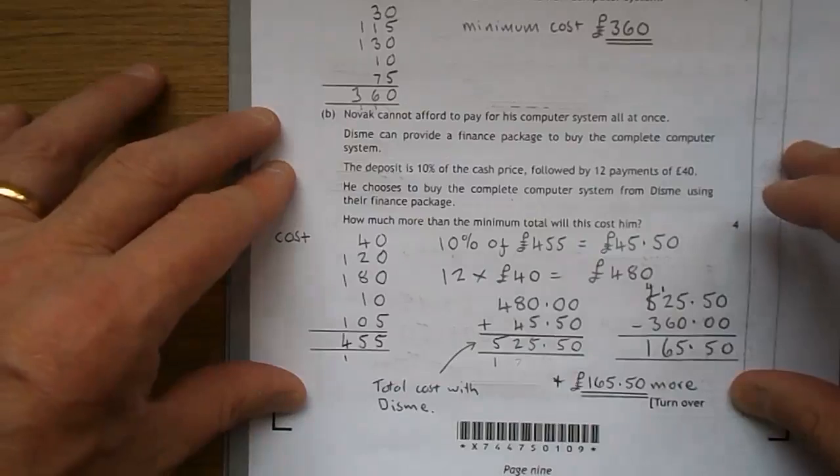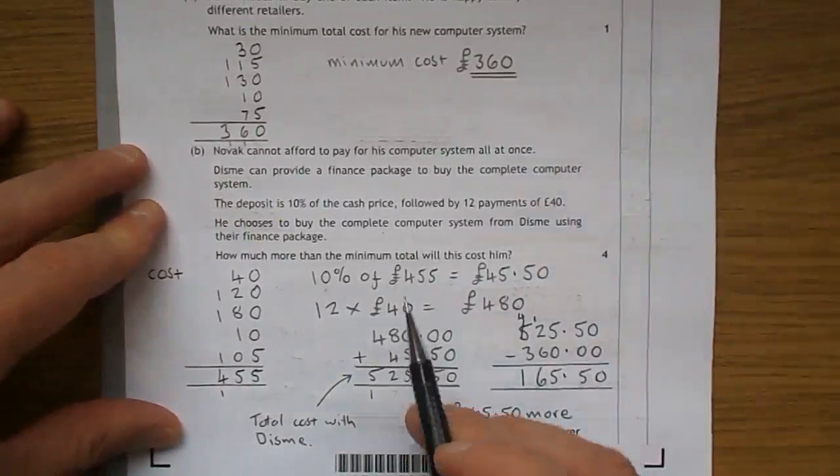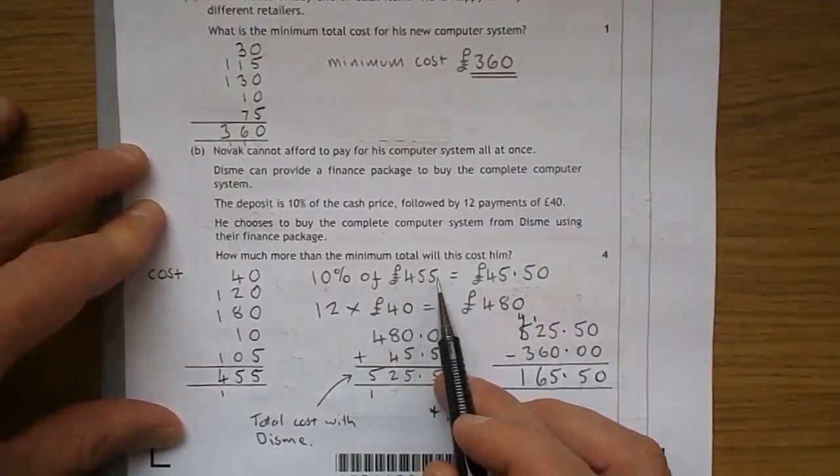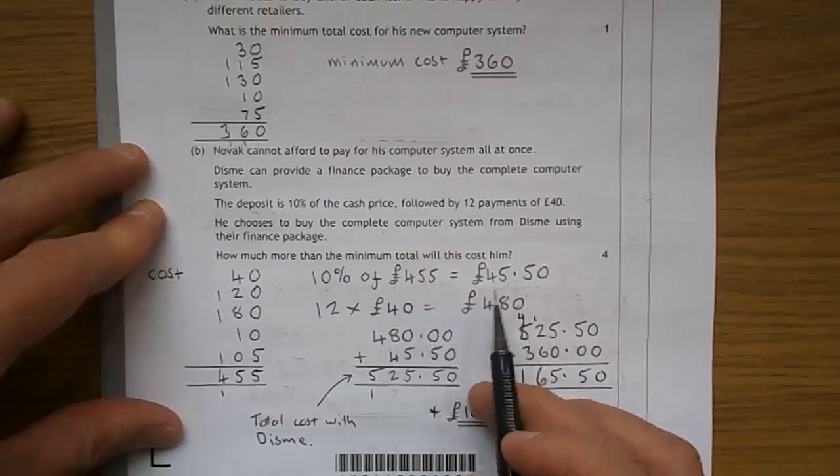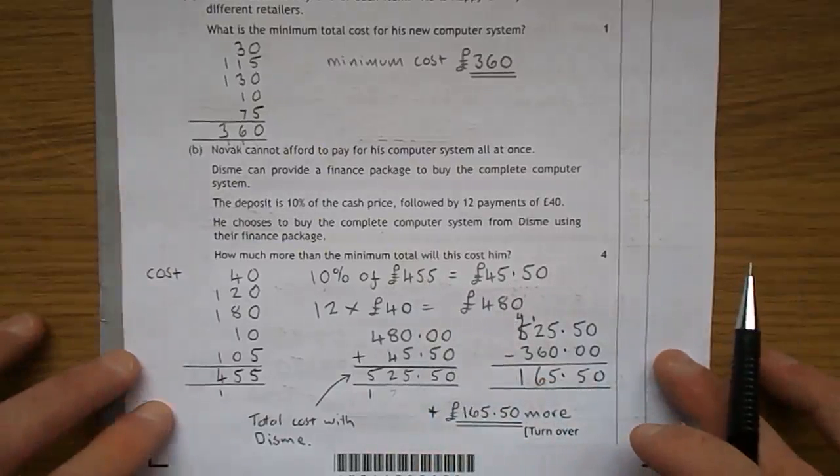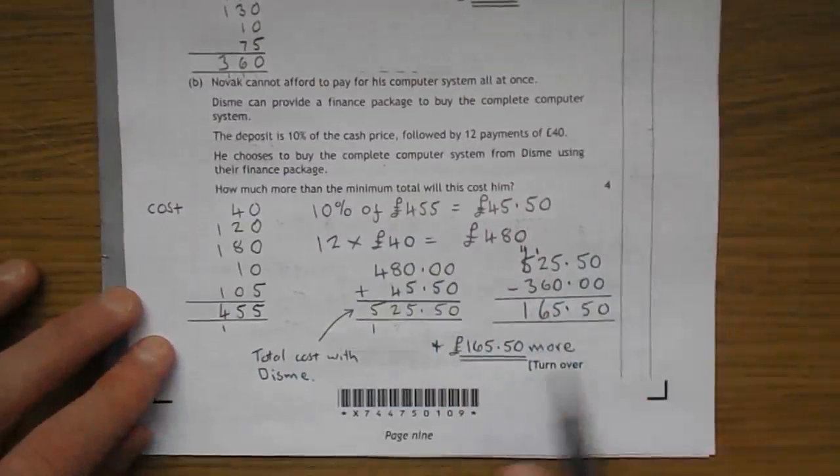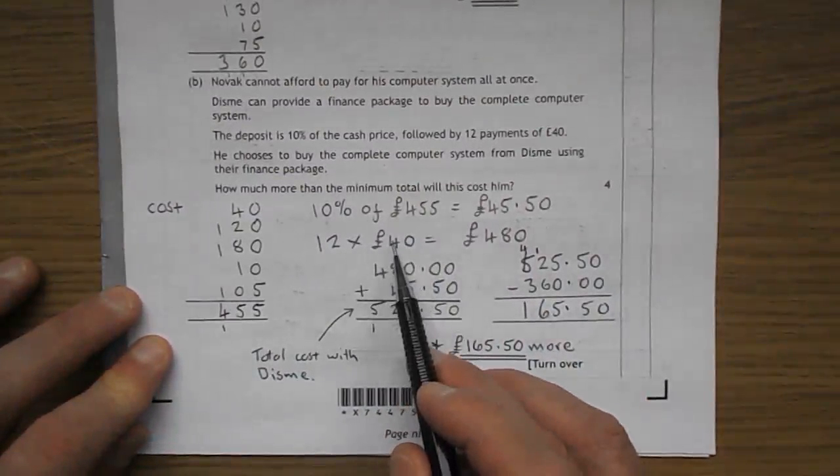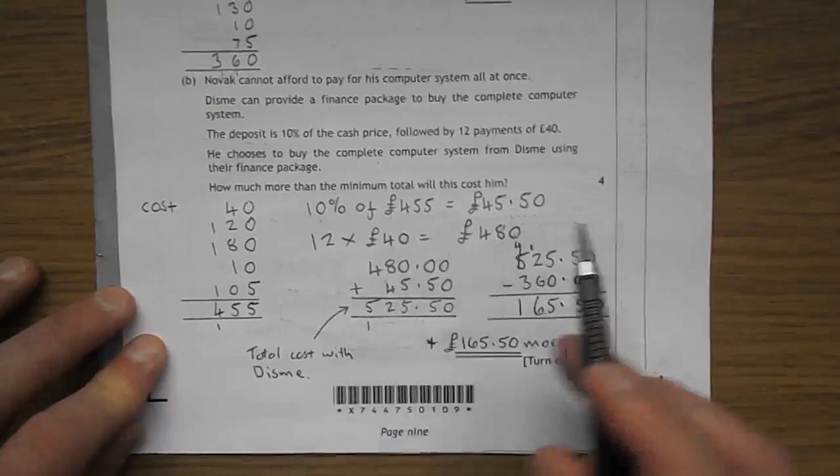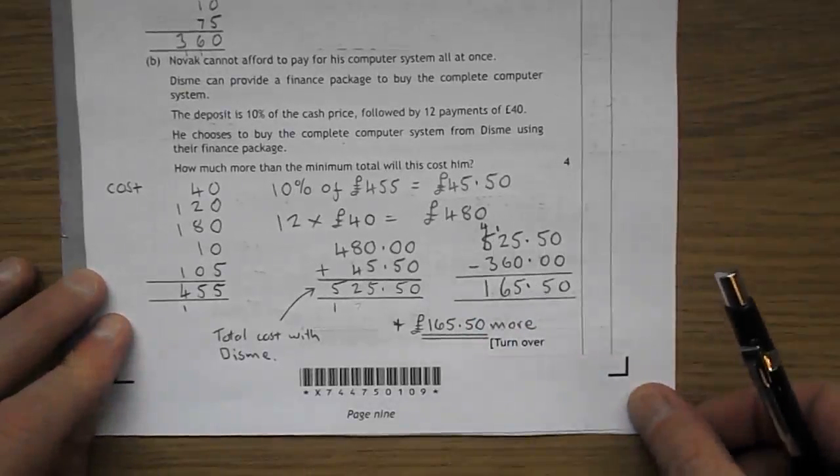So let's get the deposit. It's going to be 10% of 455. You imagine a dot at the end, bring it in once: £45.50. It's supposed to be £45.50 and 12 times 40. Well, 12 fours are 48, add the 0, 480. There it is there.